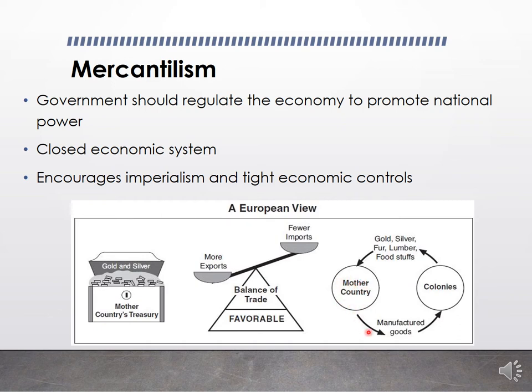Manufactured goods are sent to the colonies, and in exchange raw materials flow back — gold, silver, fur, lumber, foodstuffs, tobacco. This forms a closed cycle: nobody else is let in. All the money circulates back into the mother country's treasury. This is very different from today's capitalism with free competition and international trade.